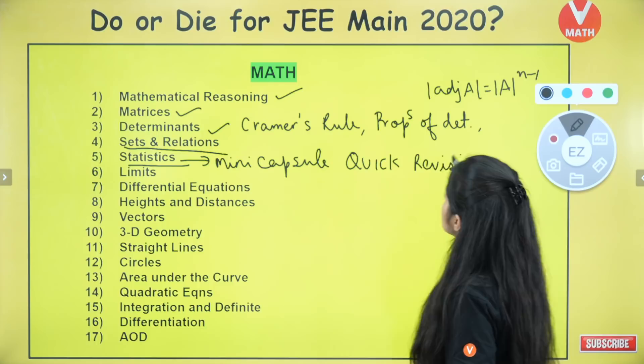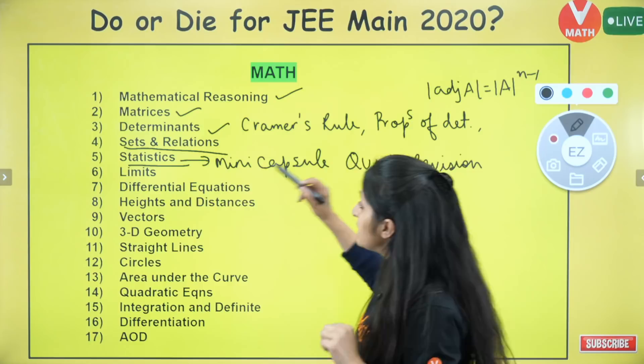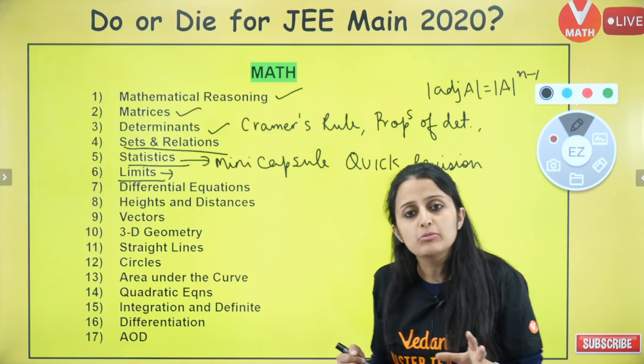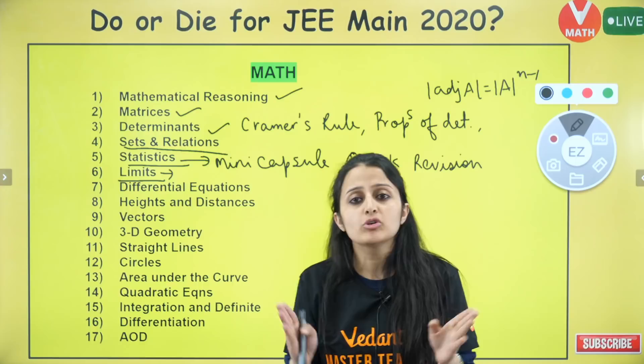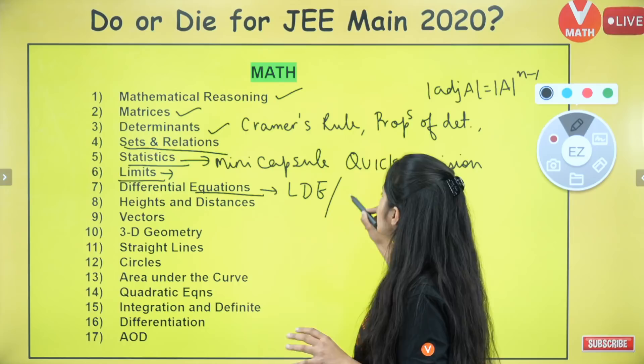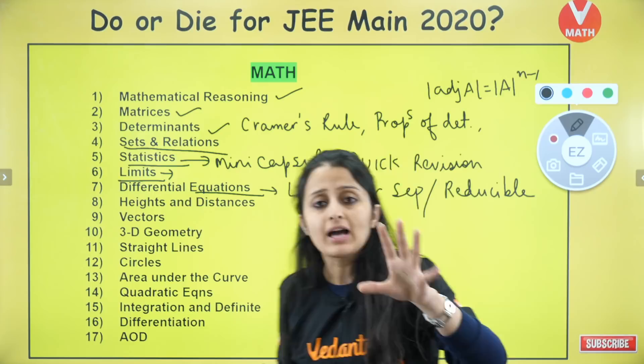Make sure you go and see the quick revision capsule. Every shift this year was found to be easy for limits — check the limits super revision series for little tricks. For differential equations, it's very similar to class 12: linear differential equation, variable separable or reducible to them, homogeneous is less common, and formation of differential equations also came this time.